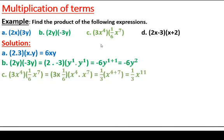The next example is 3x to the fourth times one-sixth x to the seventh. To multiply these two terms, we multiply the coefficients first, then the variables. When multiplying terms with a common base and different exponents, we keep the common base and add the exponents. So x to the power of 4 times x to the power of 7 equals x to the power of 4 plus 7, giving us one-third x to the power of 11.